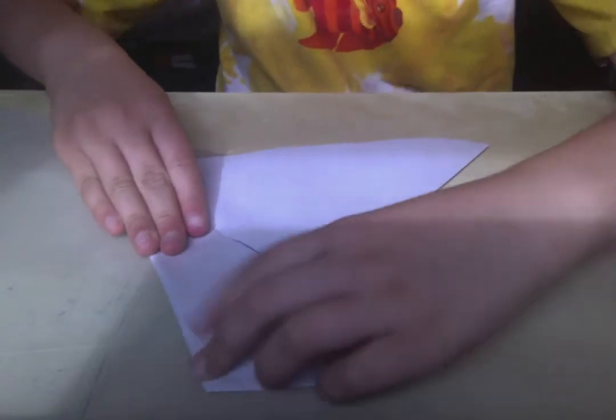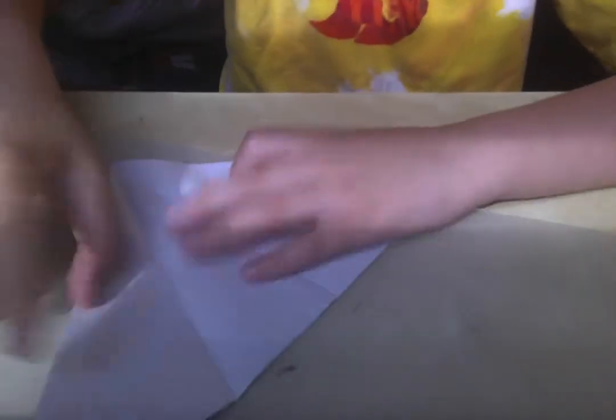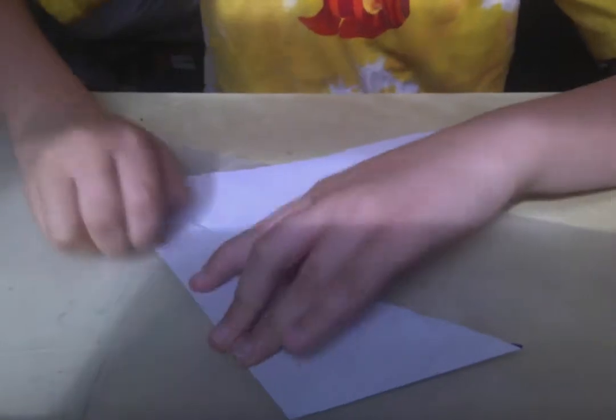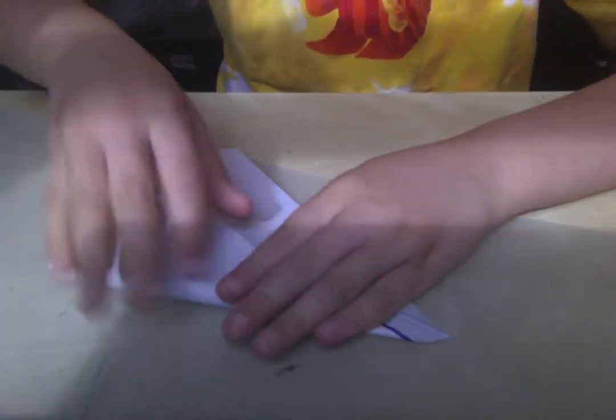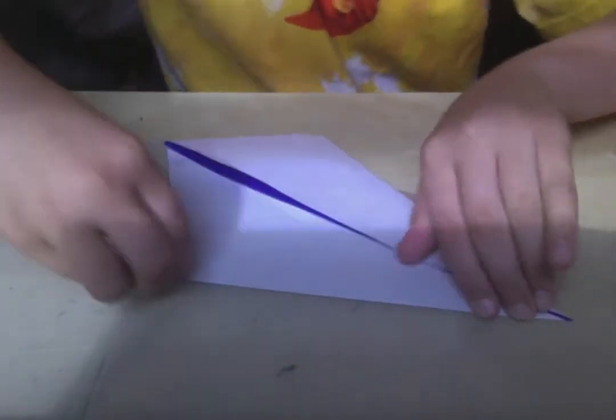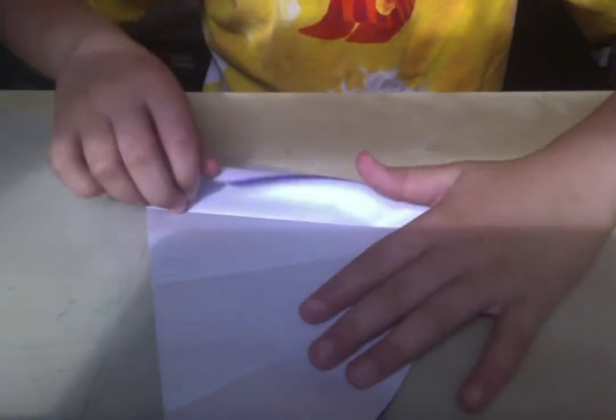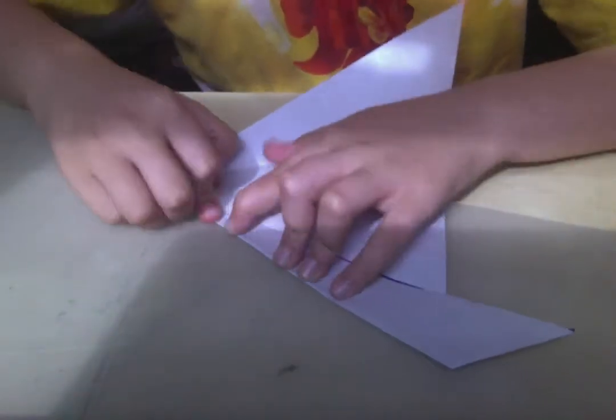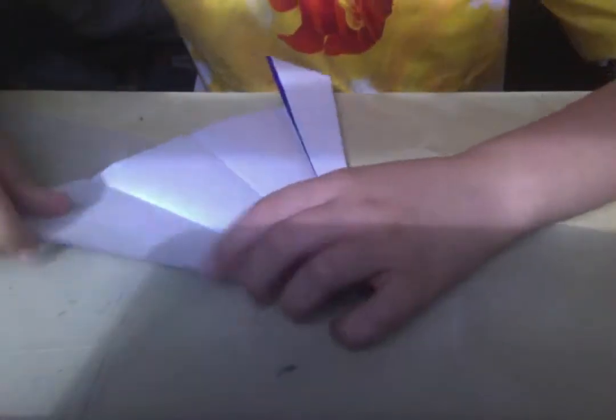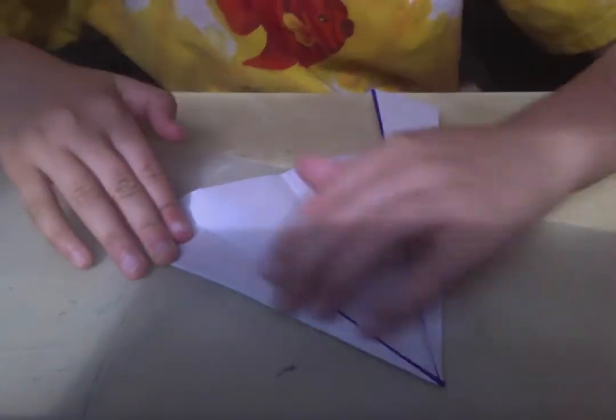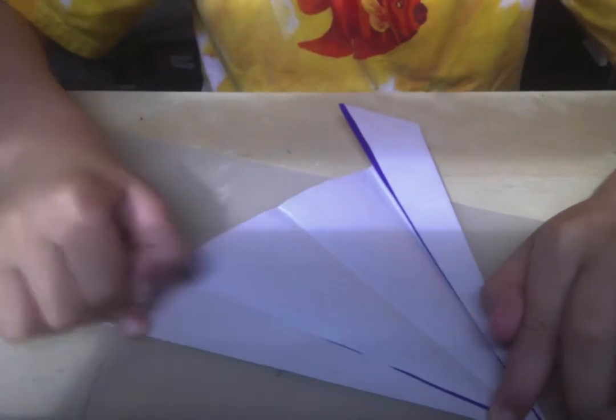Fold this edge to that crease. And crease. Unfold. And then fold to those creases. Right now we're dividing each of these small triangles into eighths. And then unfold.